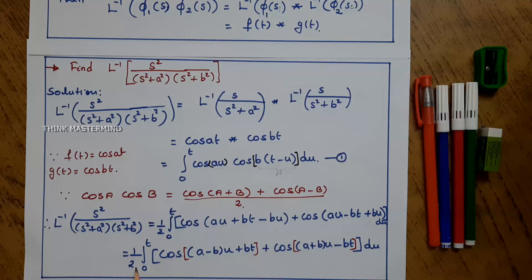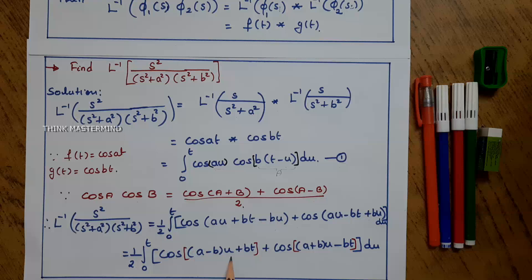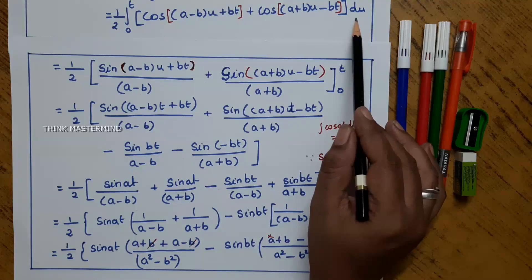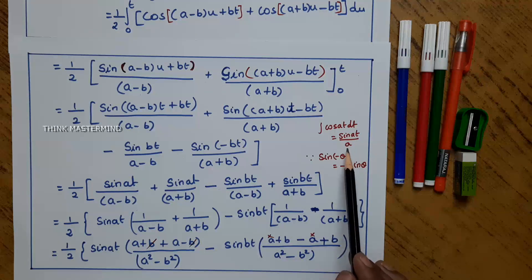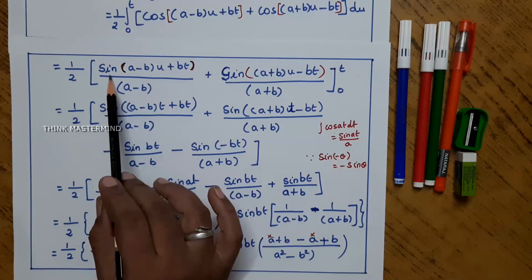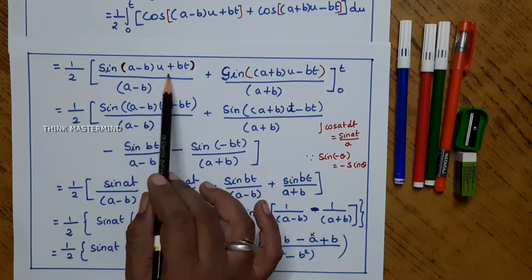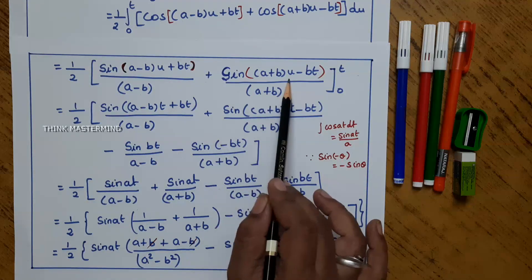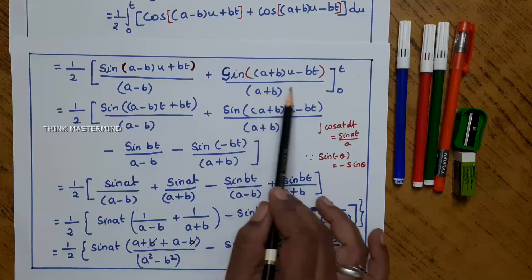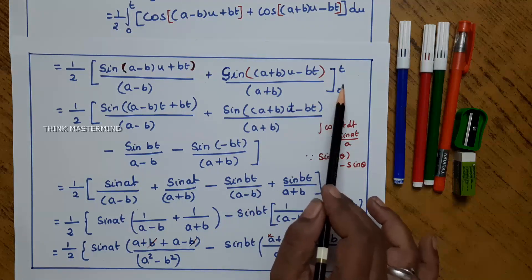Simplifying this, that is equal to one-half times the integral from 0 to t of cos((a minus b)u plus bt) plus cos((a plus b)u minus bt) du. Integrating with respect to u, we know that the integral of cos(at) dt is sin(at) divided by a. Using that, we integrate to get sin((a minus b)u plus bt) divided by (a minus b) plus sin((a plus b)u minus bt) divided by (a plus b), with limits 0 to t.